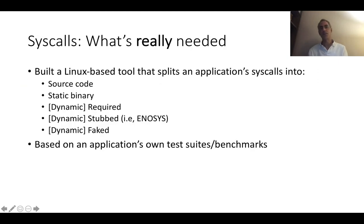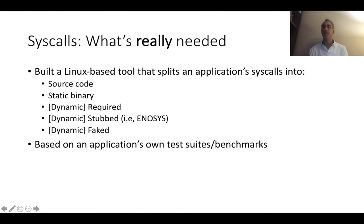To dig into this a little bit more, we started putting together a tool that is Linux-based and dynamic. It starts splitting an application's syscalls into: which syscalls are in the source code, which syscalls are in the static binary. But then it does a dynamic analysis that tells you which syscalls are required — meaning if you don't have them, the application will not run. It will tell you which are 'working if stopped,' meaning if you return ENOSYS the application still runs. Then we have another category called 'faked,' which means we return a success value but don't do any work, and we see if that also allows the application to run. The analysis is based on an application's own test suites and benchmarks.